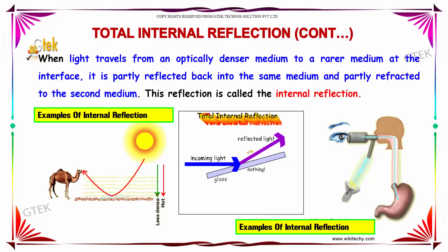So that is called internal reflection. You are able to see nothing is passed. That is total internal reflection.